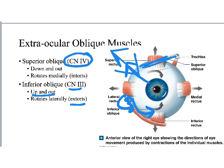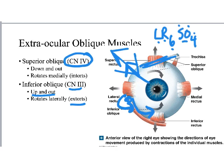To remember which two out of the six extraocular muscles are innervated by something other than cranial nerve 3, we use the mnemonic LR6SO4 — like a chemical formula. LR6 tells you that lateral rectus is innervated by the sixth cranial nerve, and SO4 tells you that superior oblique is innervated by the fourth cranial nerve. The remaining four muscles are all cranial nerve 3.